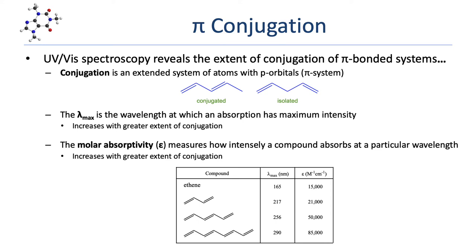What UV-Vis spectroscopy can tell us is the extent of conjugation of the pi-bonded systems in a molecule. Conjugation is simply an extended system of atoms with p-orbitals, most frequently encountered with double bonds. For a pi system to be considered conjugated, all of the atoms with p-orbitals — all atoms that are sp2 or sp-hybridized — must be contiguous. A conjugated diene has all four sp2 atoms contiguous back to back, while an isolated diene has just as many p-orbital atoms but they are not all contiguous, so the two pi bonds are not conjugated.